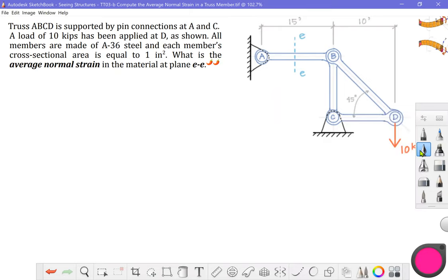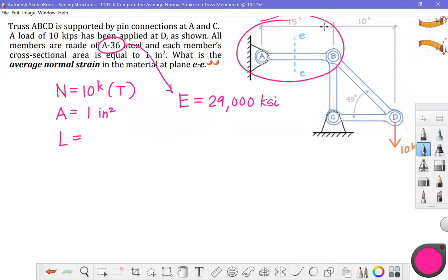We're ready to go into mechanics of materials principles. So let's just clean this up. And now we know that our normal force is 10 kips of tension. Our area is given as one inch squared. If you look up the properties for A36 steel, you're going to get a modulus of elasticity of 29,000 ksi. Our original length of member AB is 15 feet. And I think that's all we need to do this. All right. So let's figure out what our average normal strain is. Strain is defined as...